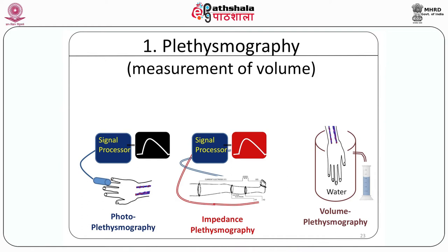Plethysmography means measuring the volume. The three techniques shown are versatile techniques currently used to measure blood flow. The photoplethysmography technique actually indicates blood flow, although it is commonly used for oxygen saturation in critical care monitoring. By using photoplethysmography combined with computational techniques, volume blood flow can be computed for a given area. The impedance plethysmography technique will be described in detail.